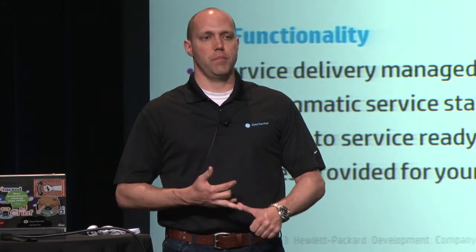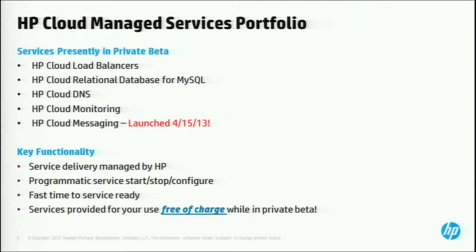Those five services are: load balancing, relational database based on MySQL, DNS, a monitoring service, and — just announced today — a messaging service. These five services represent that at the end of making just seven API calls, you can have a functional load balancer, a functional database, DNS with an associated A record, a metric stream via AMQP, and a messaging queue — all the window dressing around your application to showcase its unique value. Seven API calls.